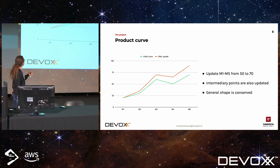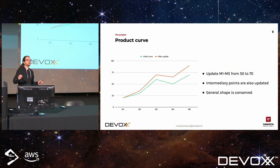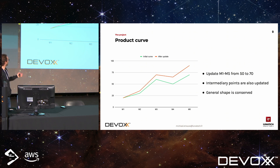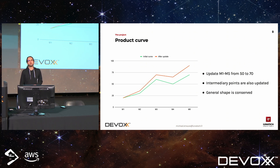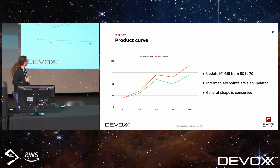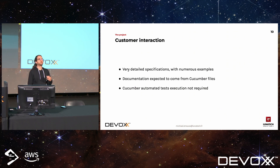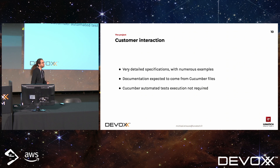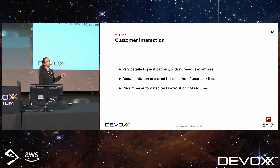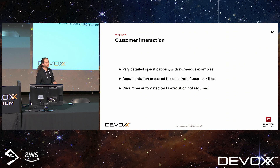Within the product, we were handling curves with time and price as axes. Starting with a green curve, when we update the last point, the resulting orange curve shows that all points are also updated — not just the last one — and the general shape is conserved. To do that, we had a lot of rules to apply. The customer provided very detailed specifications: about 50 pages describing 30 business rules with many numerical examples and all cases explained.